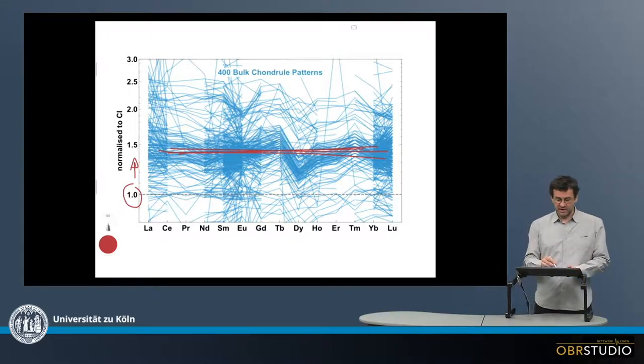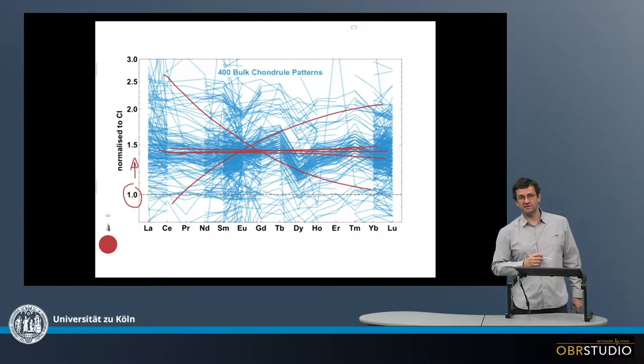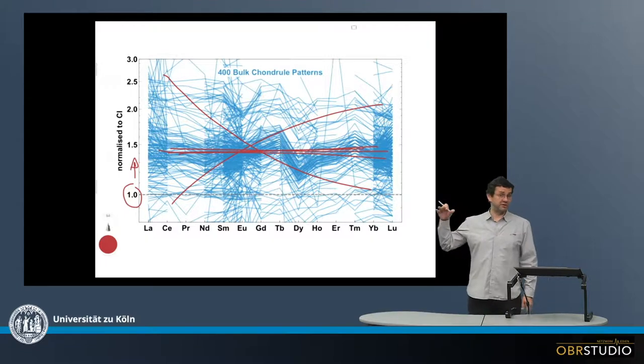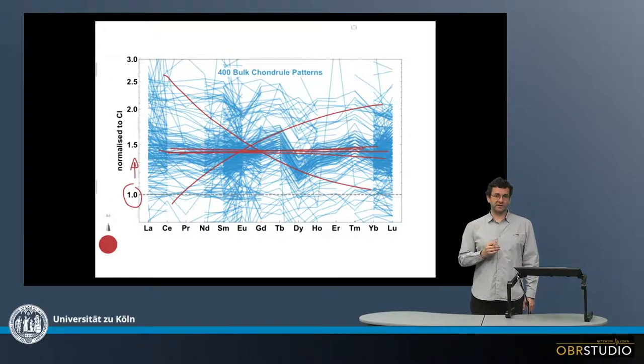And we might expect patterns something like this, that we know from earth, terrestrial basalts or something like this. That's not what we observe, or only in very rare cases, but not in the typical case. So chondrules must have come from material that was unfractionated and slightly enriched in refractory elements.